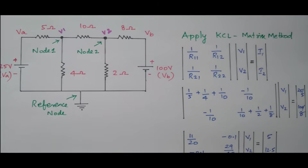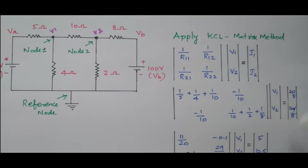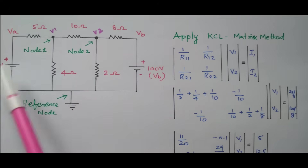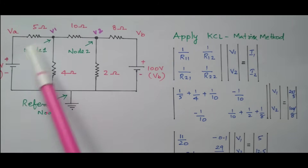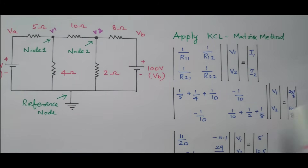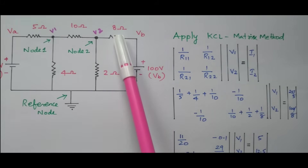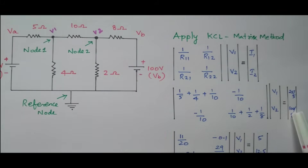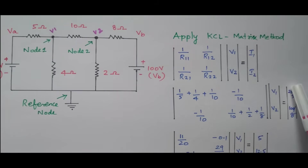Next we set up the voltage matrix and the current matrix. The voltage matrix contains V1 and V2, which is what we need to find. For the current matrix, I1 equals V/R: 25 divided by 5 gives the current at the first node. Similarly, I2 equals 100 divided by 8, since the 100V source is directly connected to the 8 ohm resistor. We have now framed the resistance, voltage, and current matrices.